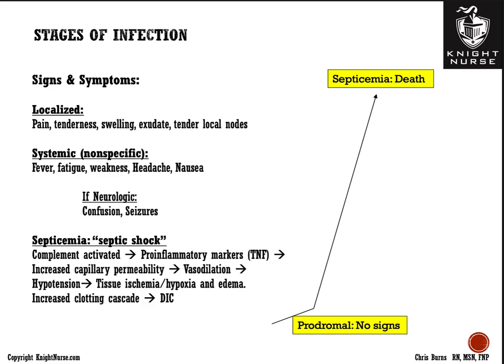In severe cases, infection can progress to septicemia — an overwhelming infection that activates complement and pro-inflammatory markers like tumor necrosis factor (TNF), increasing capillary permeability, causing systemic vasodilation, leaky vessels, edema, hypotension, and tissue ischemia leading to organ failure. Platelet aggregating factor (PAF) activation can cause clotting disorders like DIC. Fortunately, in most cases the immune system kicks in before septicemia and the patient recovers.